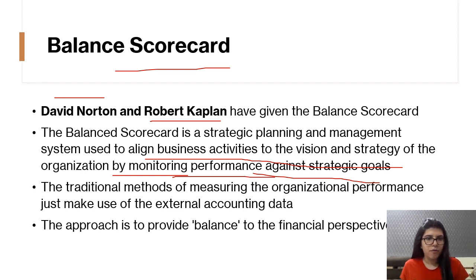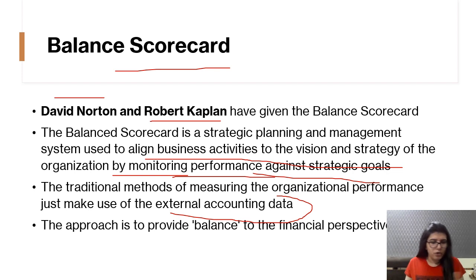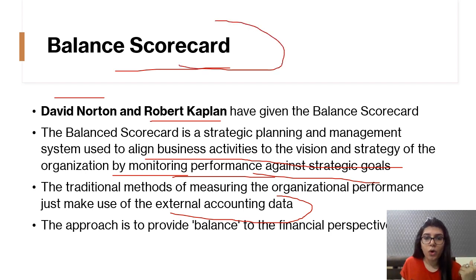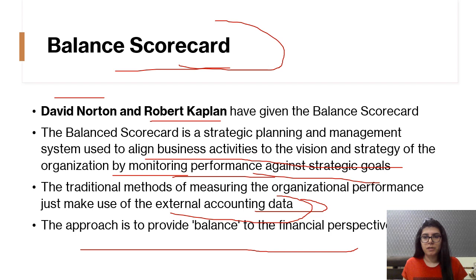The traditional method of measuring organizational performance just makes use of external accounting data. Most companies that are not well-developed are simply checking accounting data — whether they are going into profit or loss, and how much liabilities they have. They are not taking into account other perspectives that are essential to achieve the vision and strategy of the organization. The Balanced Scorecard approach came so that we don't rely solely on accounting data but take other things into account as well.